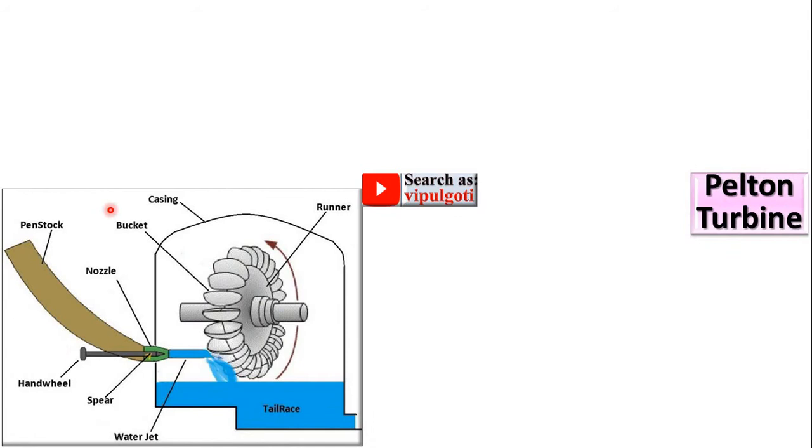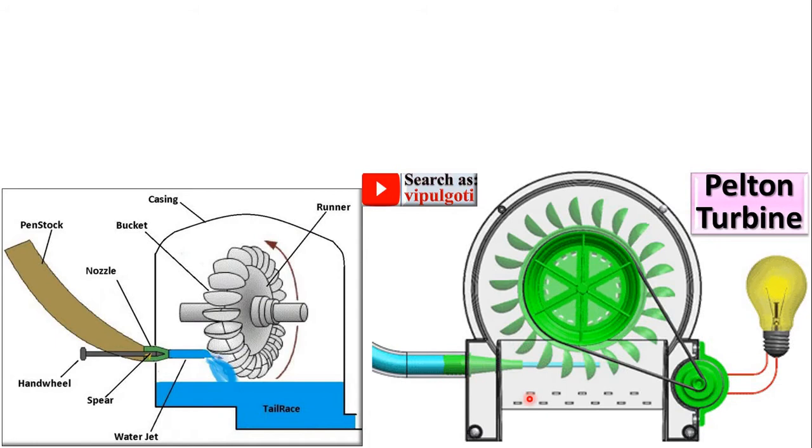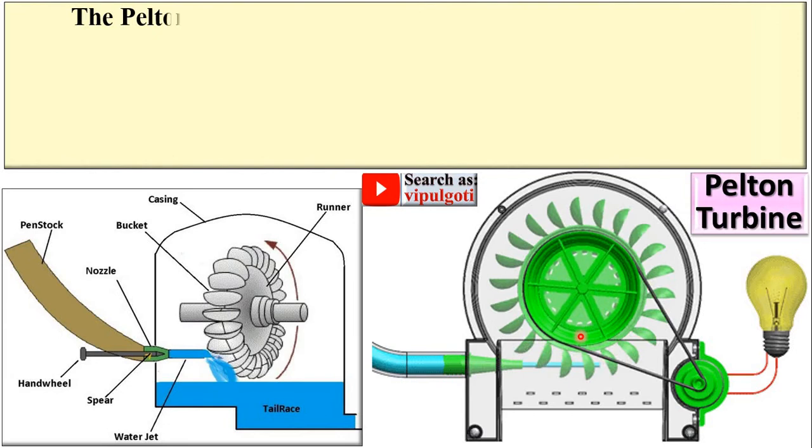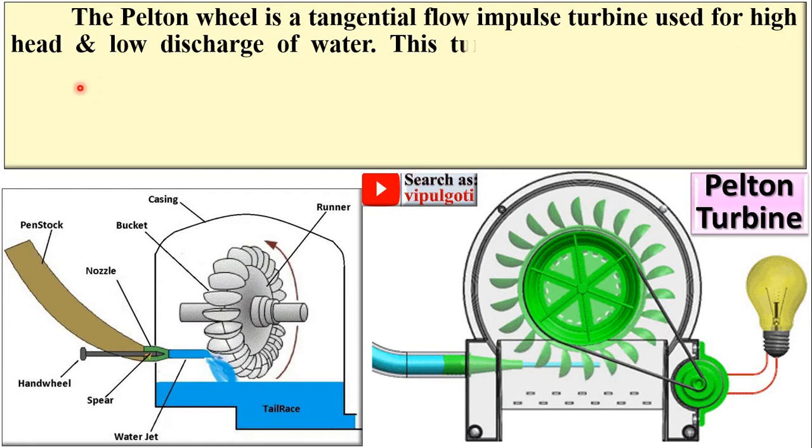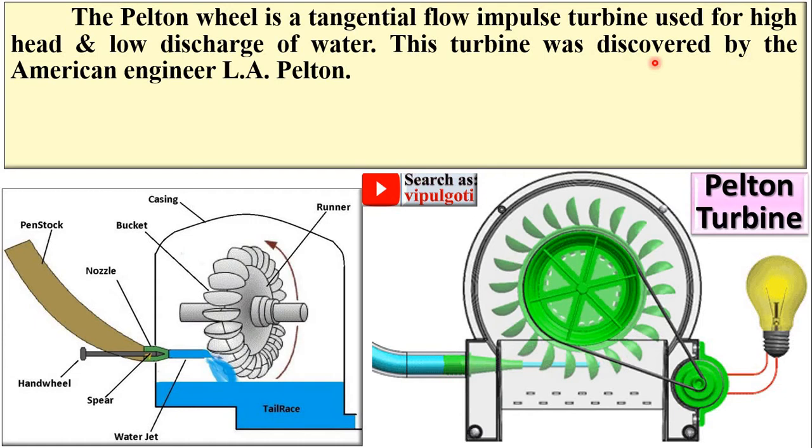This is the layout of the power plant where our focus is on the Pelton turbine, and this one is the animation of the Pelton wheel. The Pelton wheel is a tangential flow impulse turbine used for high head and low discharge of water.